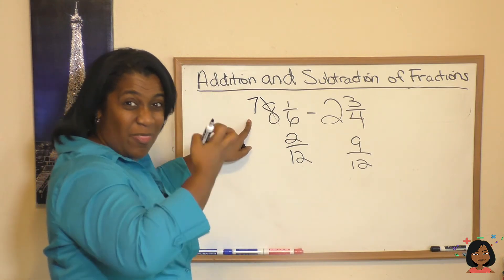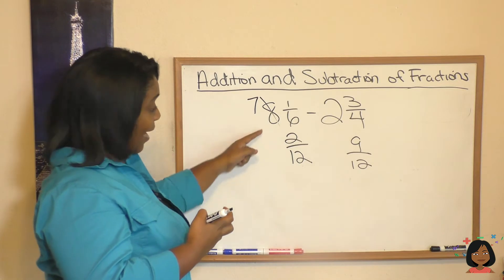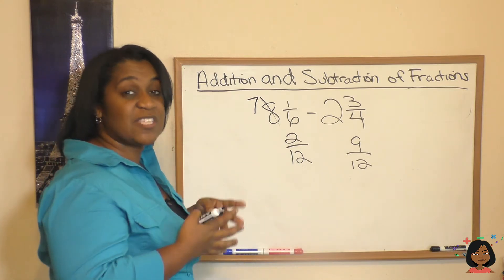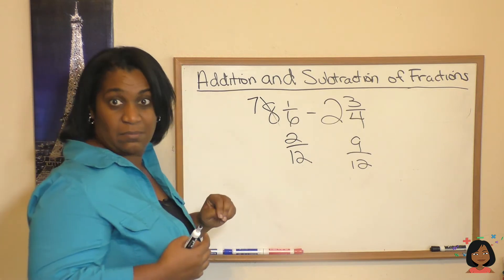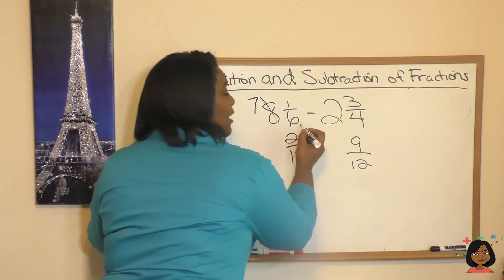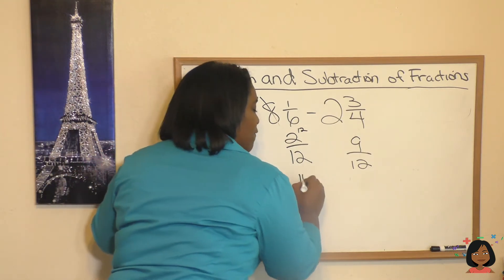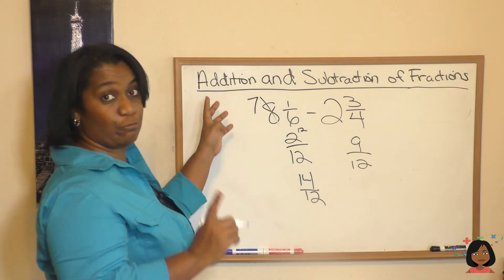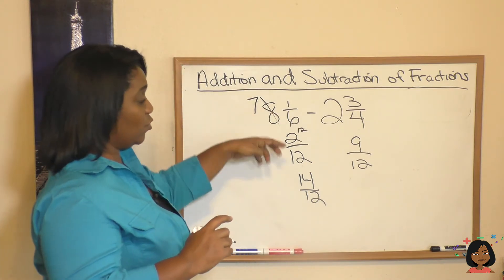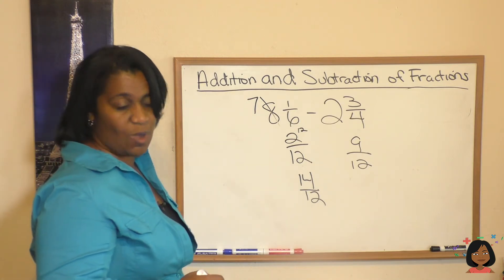I'm going to take that 1 that I just took away from this 8. I'm going to bring it over here. 12 twelfths is the same as 1. So I'm going to add, right up here in the corner, 12 twelfths to my 2 twelfths, which is going to be 14 twelfths. You with me? So all I did was regroup 1 to 12 twelfths and add it to the 2 that was there. That is why I have 14 twelfths.